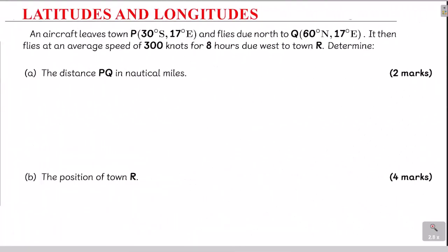Latitudes and longitudes. An aircraft leaves town P, 30 degrees south, 17 degrees east, and flies due north to Q, 60 degrees north, 17 degrees east. It then flies at an average speed of 300 knots for 48 hours due west to town R.